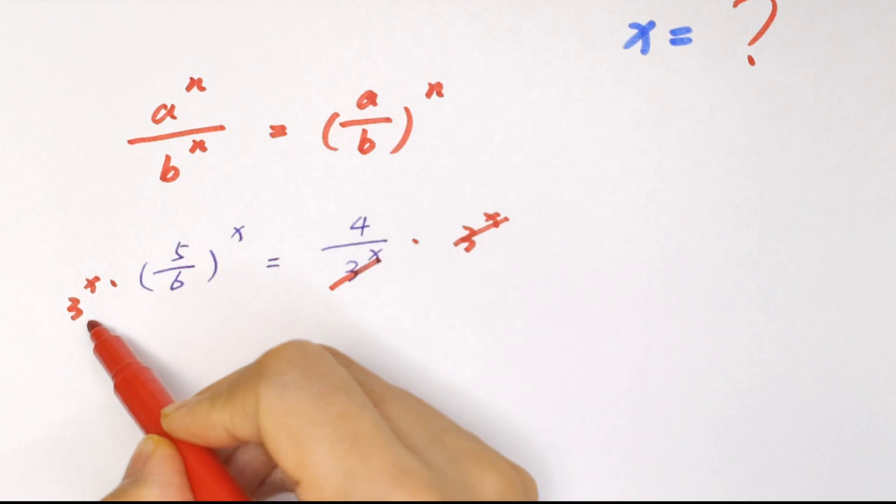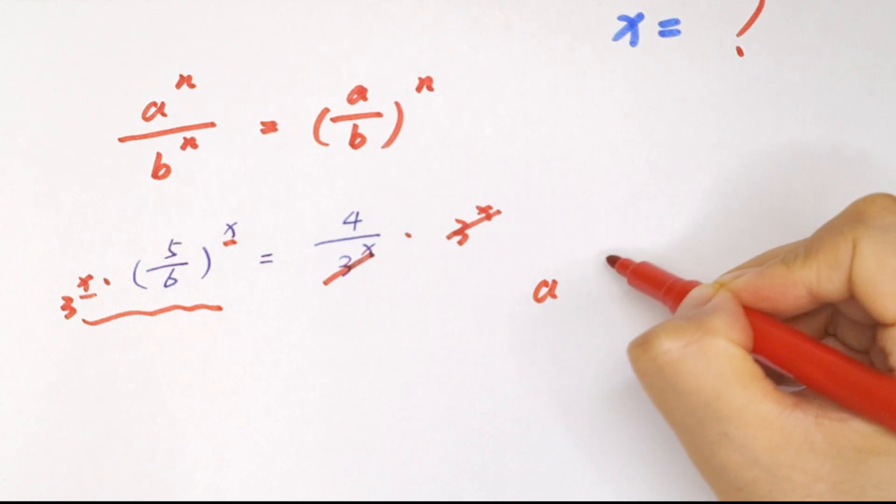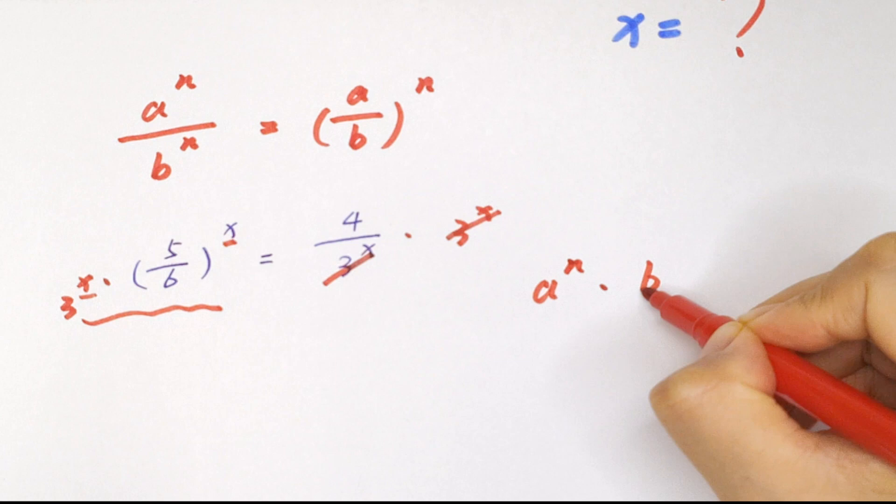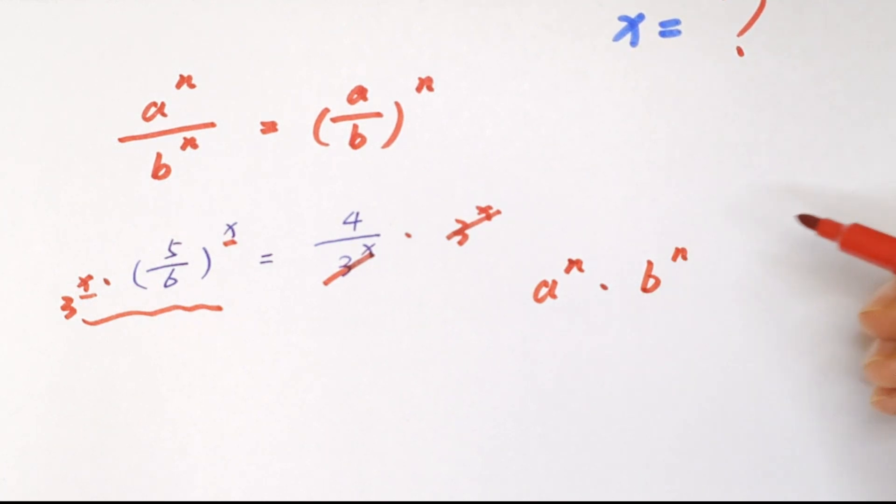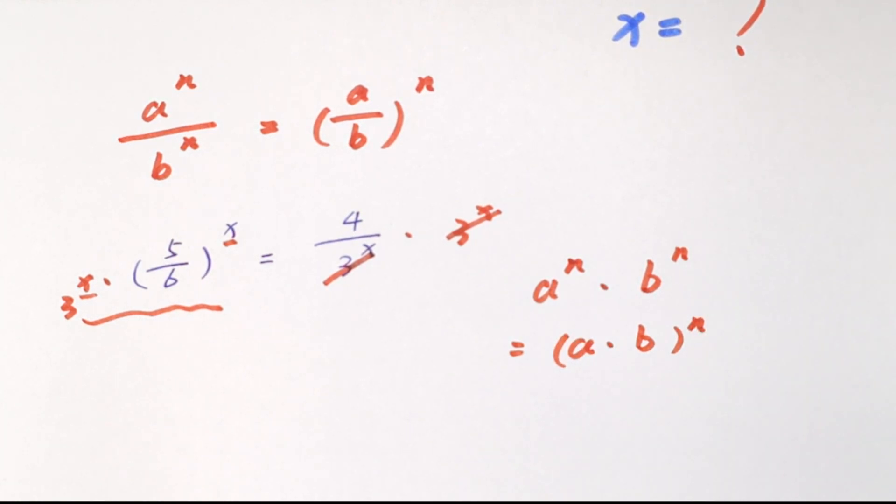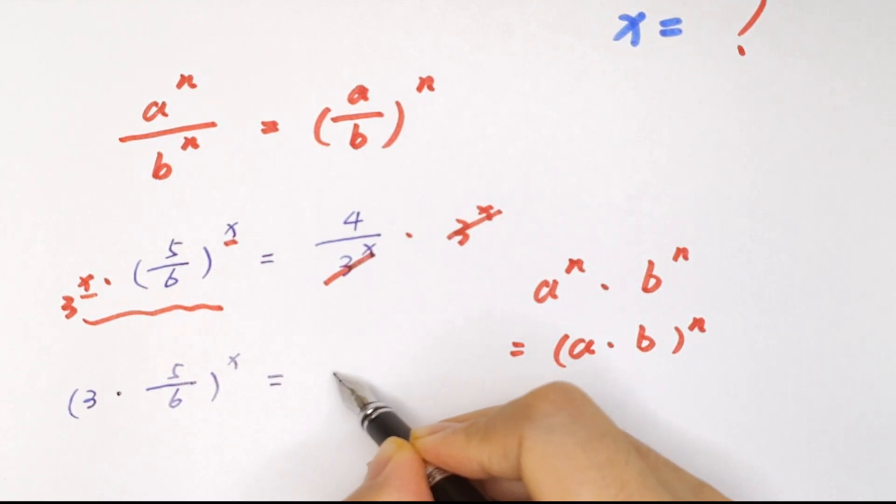And in here we have same powers, a to the power of n times b to the power of n equals a times b bracket to the power of n. So to be 3 times 5 over 6 bracket to the power of x equals 4.